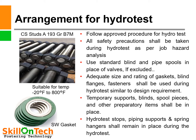Follow the approved procedure for hydrotest. All safety precautions shall be taken during hydrotest as per job hazard analysis. Use standard blinds, flanges, and pipe spools in place of valves if excluded. Adequate size and rating of gaskets, blind flanges, and fasteners shall be used during hydrotest similar to design requirements of the pipeline. Temporary supports, blinds, spool pieces, and other preparatory items shall be in place. Hydrotest stops, piping supports, and spring hangers shall remain in place during the hydrotest.